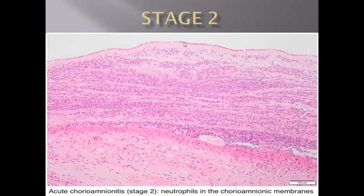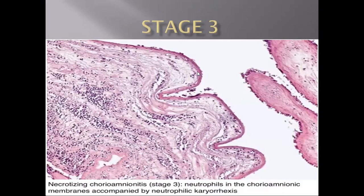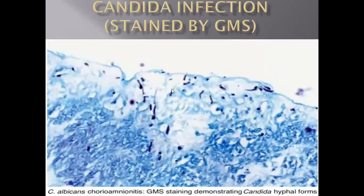You can see a flat lining of cuboidal cells of the amniotic membrane. As the inflammatory response progresses further, it creates papillary structures on the amniotic membrane, which indicates an underlying inflammatory reaction. In Stage 3, there is involvement of both chorionic and amniotic membranes with karyorrhexis of the neutrophils. This GMS stain highlights hyphae formation in candidal infection.